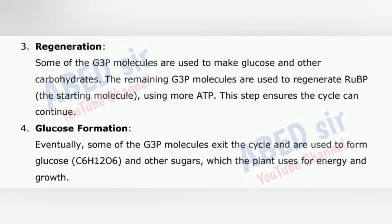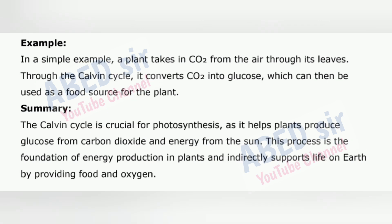4. Glucose Formation – eventually, some of the G3P molecules exit the cycle and are used to form glucose (C₆H₁₂O₆) and other sugars, which the plant uses for energy and growth. For example, a plant takes in CO₂ from the air through its leaves; through the Calvin Cycle, it converts CO₂ into glucose, which can then be used as a food source. The Calvin Cycle is crucial for photosynthesis, as it helps plants produce glucose from carbon dioxide and energy from the sun. This process is the foundation of energy production in plants and indirectly supports life on earth by providing food and oxygen.